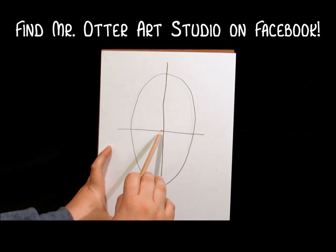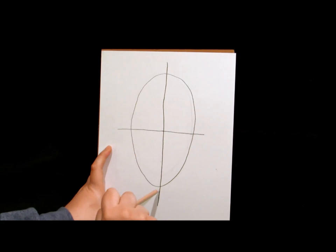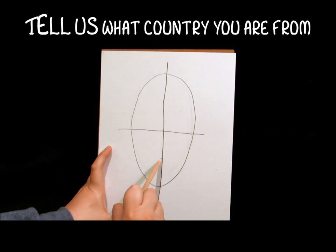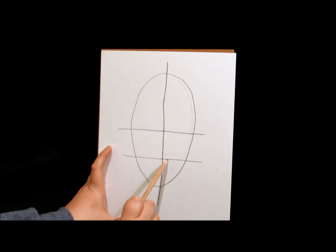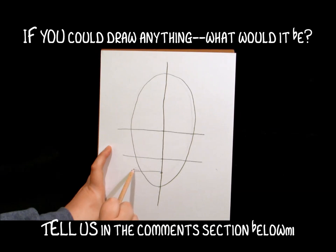Now we're going to find the midpoint between this center line and the bottom of the oval and draw another horizontal line through it. Then again find the center point between the line you just drew and the bottom of the oval, see it's about right there. Draw another line.